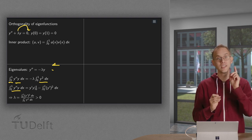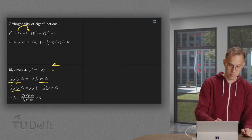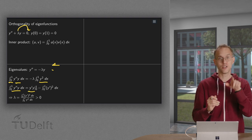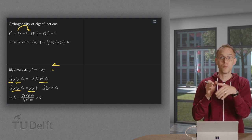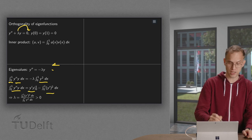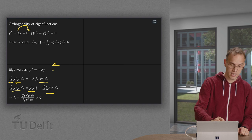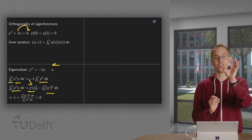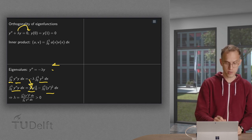For the left hand side we use integration by parts on y double prime times y. Integrating y double prime and leaving y gives us y prime times y evaluated between zero and one, minus the integral of y prime times y prime. The boundary term equals zero because y at zero and y at one are both zero, so this term drops out.